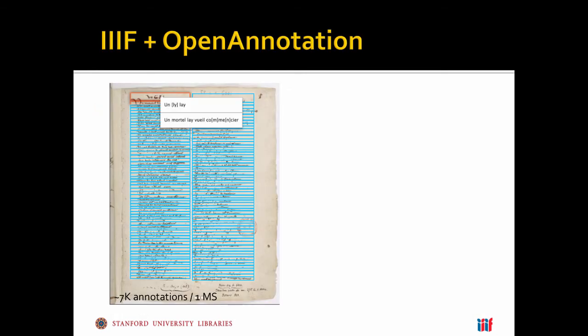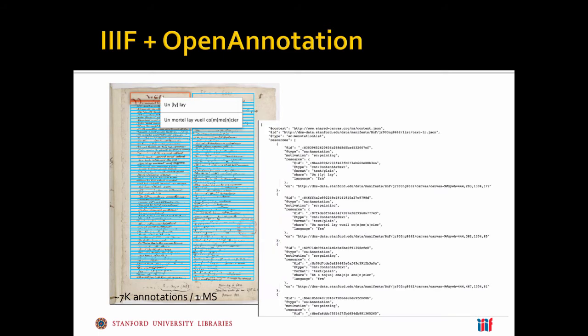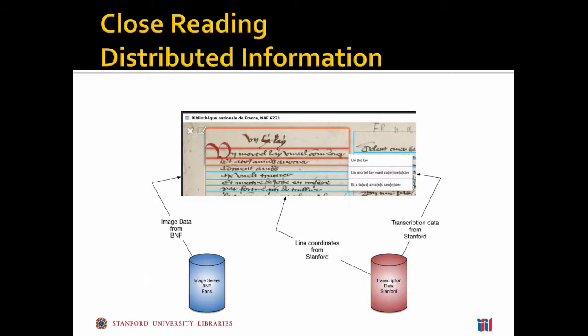What that leads to is bunches of regions of interest with text associated with them living around the world. With IIIF and open annotation, we can at least make the linkage to the underlying resource through linked data, so we can keep the text somehow associated with the image even though they might be living in different locations. Here the image you're looking at is served from the BnF, the transcription data is being served from Stanford, but it's still that push out—being brought together in an interface, but we're still not getting a whole lot back from our users.